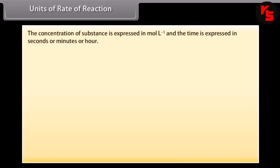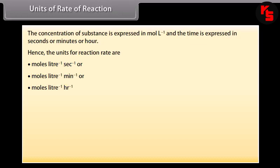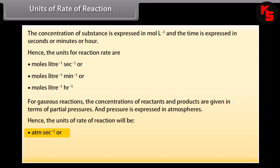The concentration of substance is expressed in mol per litre and the time in seconds, minutes, or hours. Hence, the units for reaction rate are mol/L/s, mol/L/min, or mol/L/hr. For gaseous reactions, the concentrations of reactants and products are given in terms of partial pressures, and the units of rate of reaction will be atm/s, atm/min, or atm/hr.